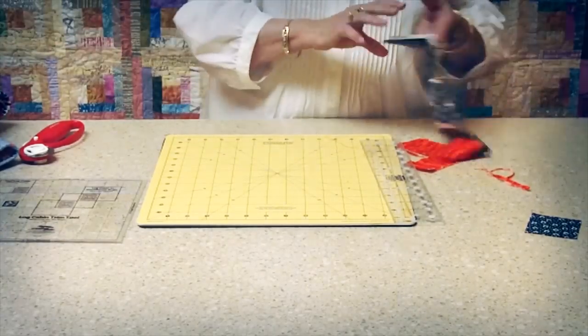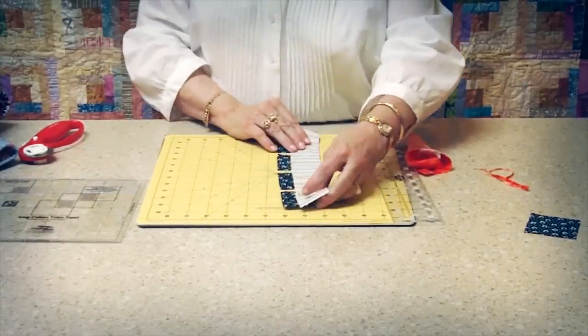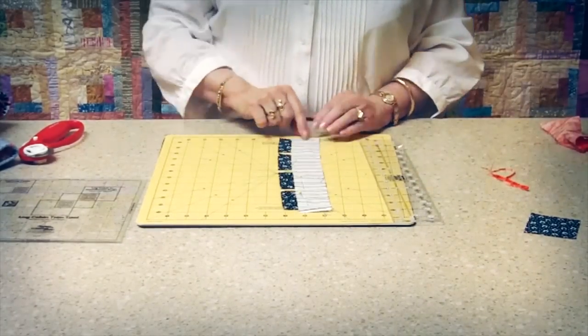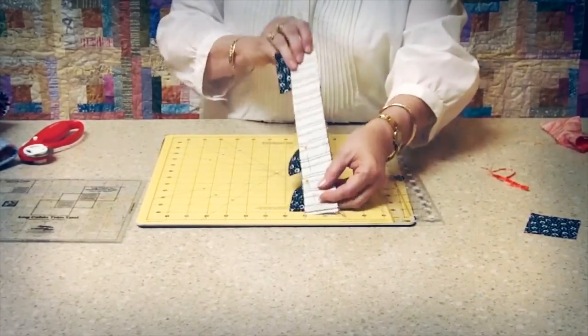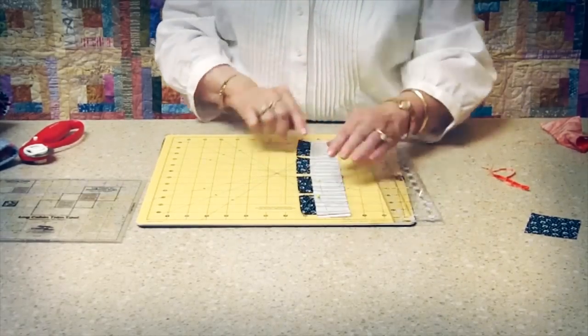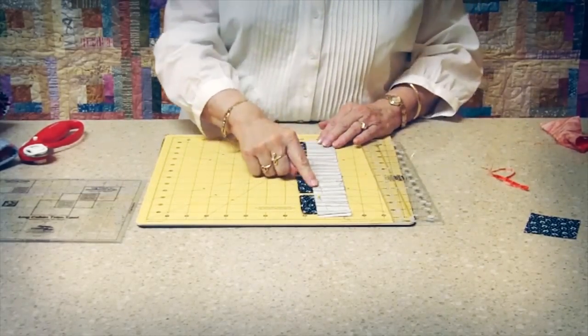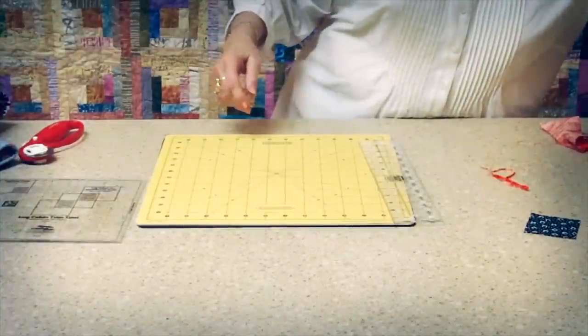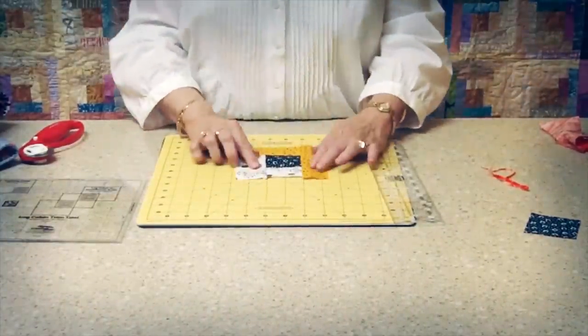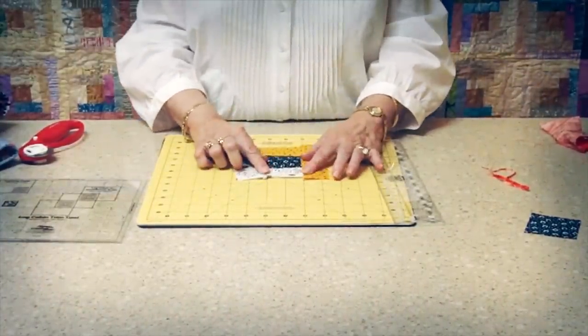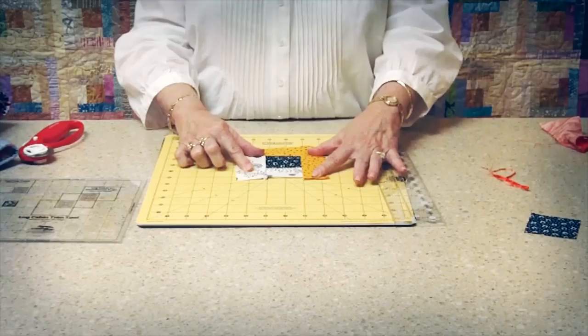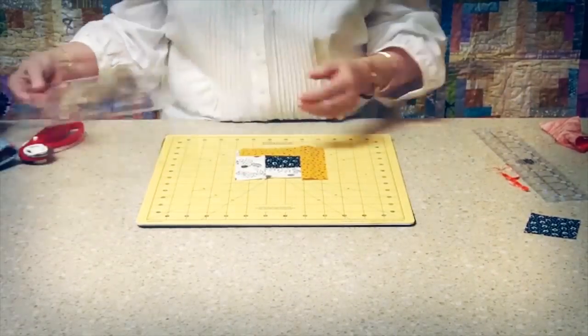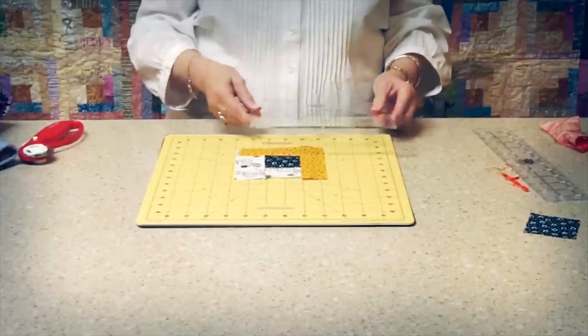One of the nice features of the log cabin trim tool is that you can save time by chain sewing. Here are my strip and my four log center squares in place. You can pin if you want but you don't have to pin. You sew four rounds around the center square and I finger press my strips when I am sewing them in place. But before I use the trim tool to trim my block I always press with an iron for a good firm press.